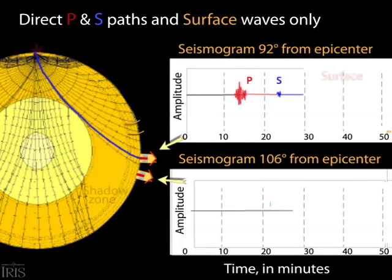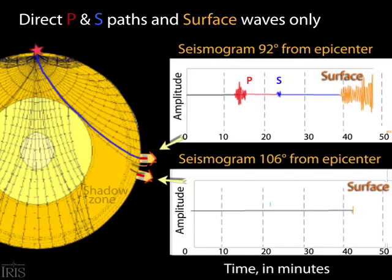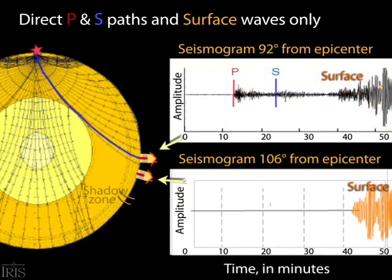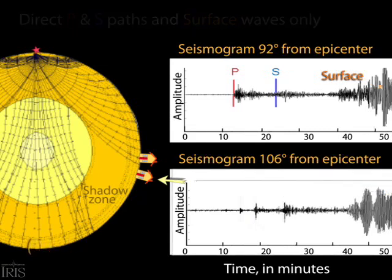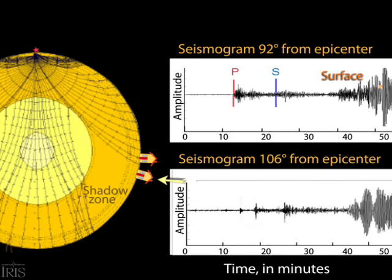In the shadow zone you'll notice there are no direct P or S arrivals, but the slower surface waves show up at all stations. An actual seismogram at 92 degrees shows the arrival of the direct P and S waves as well as the surface waves. However, if we look at an actual seismogram from 106 degrees we see more complexity than just the surface waves we expected.